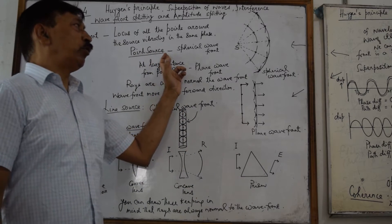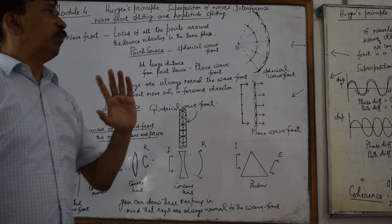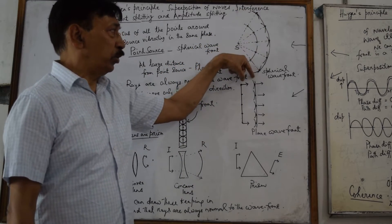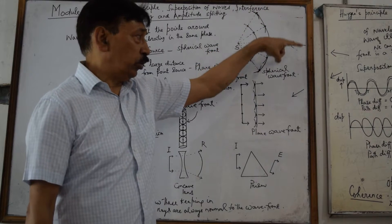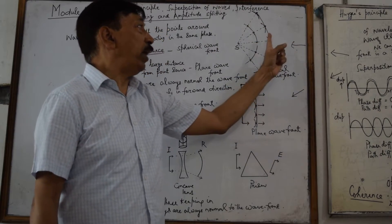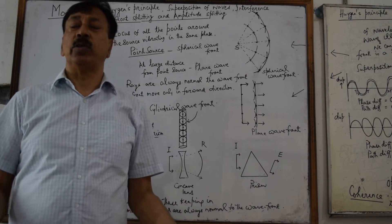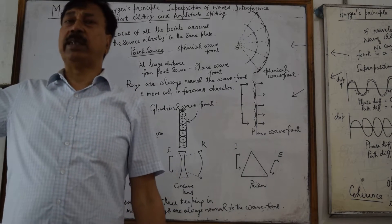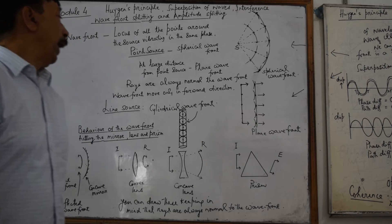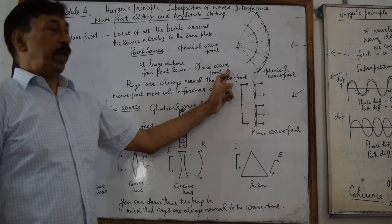If the source is a point source, the wavefront will obviously be spherical. But if you consider points at a large distance from the source, the curvature goes on decreasing, and at a very large distance the wavefront becomes plane. Therefore, the wavefront at a large distance from a point source will be a plane one. For example, the wavefront from the sun striking the earth is a plane wavefront.